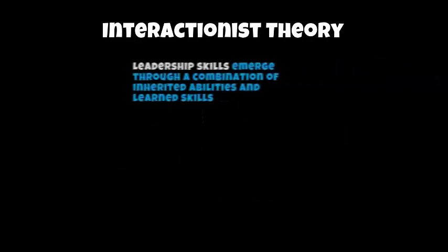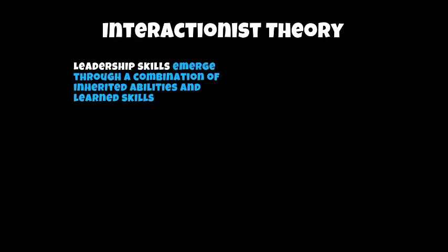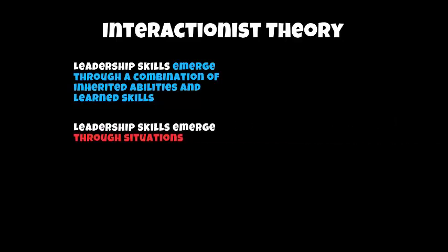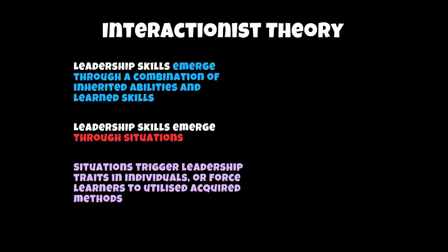The final theory is Interactionist Theory. This is a combination of inherited ability — so genetic quality — and learned skills through Social Learning Theory. We're saying that leadership skills emerge through being naturally a good leader but also learning through others. Mainly, leadership skills through Interactionist Theory emerge through certain situations arising — for example, if someone has broken their leg on a field of play and you're the nearest person, you have to react to that, and it could trigger a leadership trait.